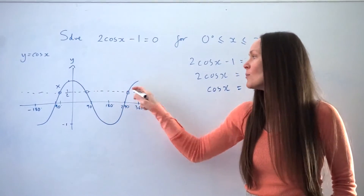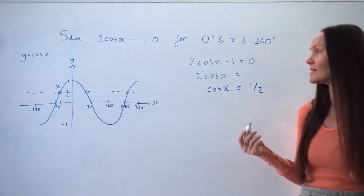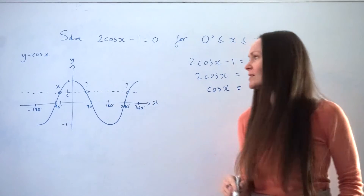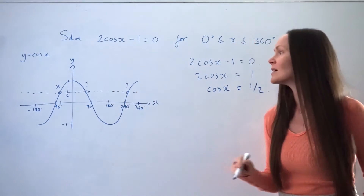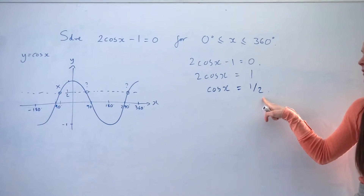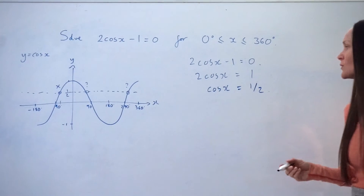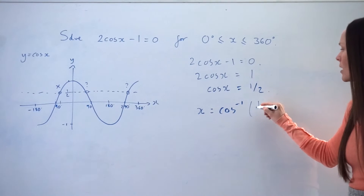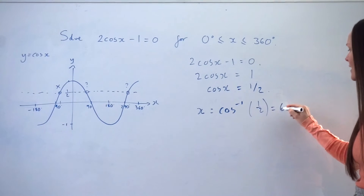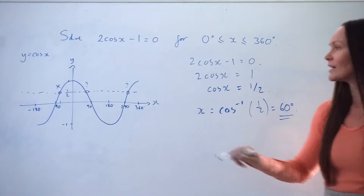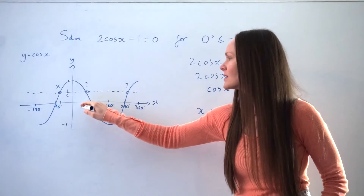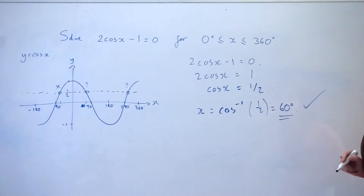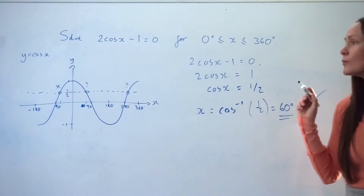These two points both have x-coordinates that fall between 0 and 360, so we want to work out the x-coordinate of those two intersection points. To find the first solution, all you have to do is type into your calculator cos minus 1 of 1 half. We should find that it's equal to 60 degrees. So that's the first solution — 60 degrees falls within the range of 0 to 360, so we know this is definitely a solution.